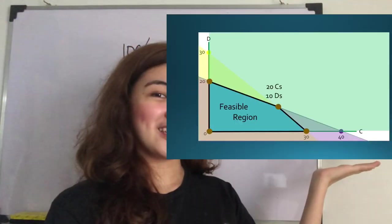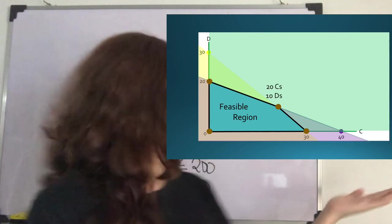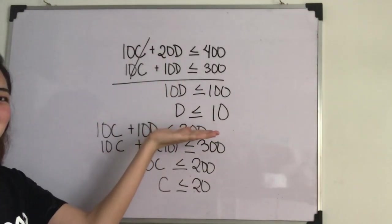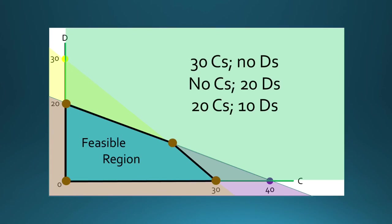So as you can see in this PowerPoint, we have 20 Cs and 10 Ds. As you can see from the PowerPoint presentation, here are the possible combinations in the extreme points, excluding 0C and 0D. We have 30C with no Ds, no Cs with 20Ds, 20Cs with 10Ds.